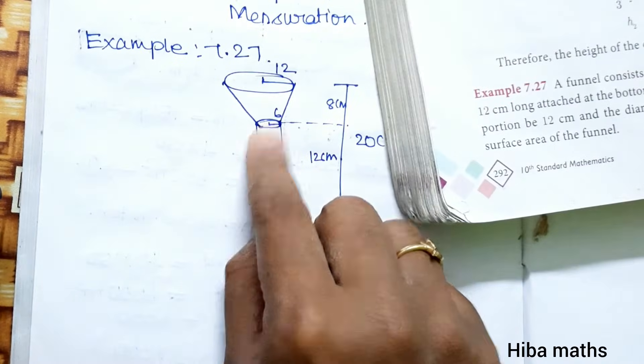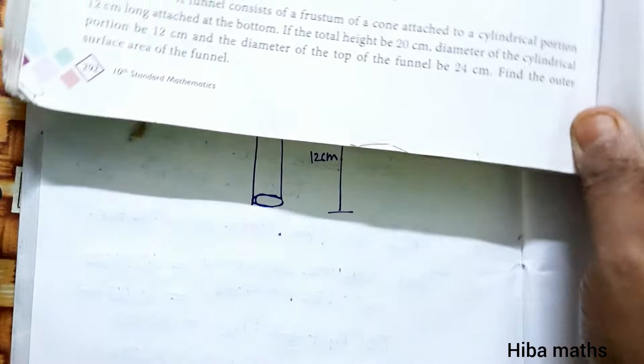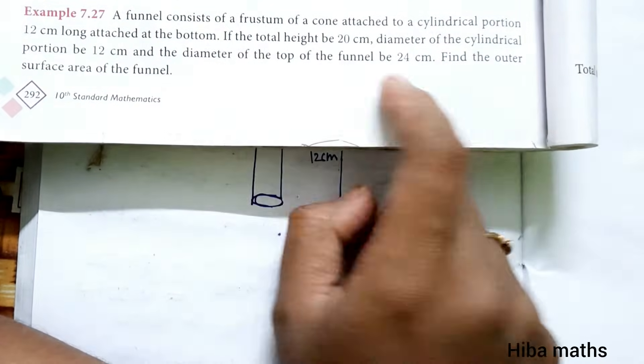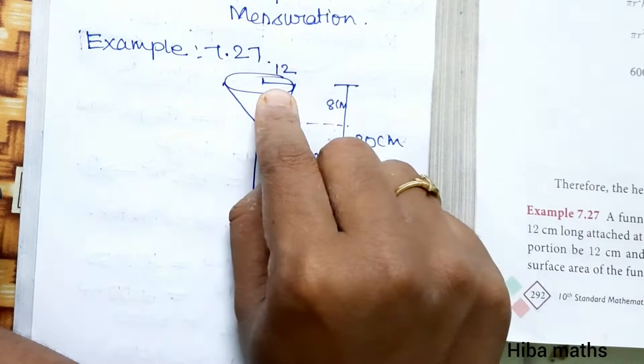Radius is 6 cm. The top of the funnel is 24 cm, this is diameter. The frustum height is 8 cm.